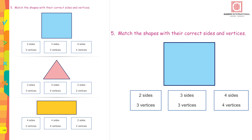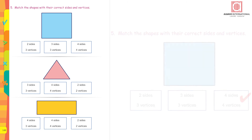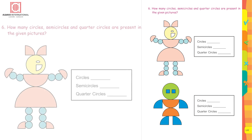Match the shapes with the correct sides and vertices. I'll do the first one with you — this is a square. How many sides? 4 sides. How many vertices? 4 vertices. Tick the correct box. Now do questions 2 and 3 on your own.